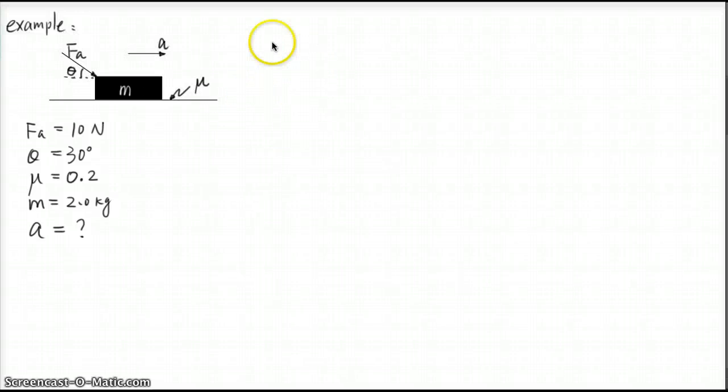OK, so look at this question. The information is given. The friction is not frictionless - there is friction, so mu equals 0.2. And then we apply the force with the angle theta. That's quite different from the question you have done in grade 11.